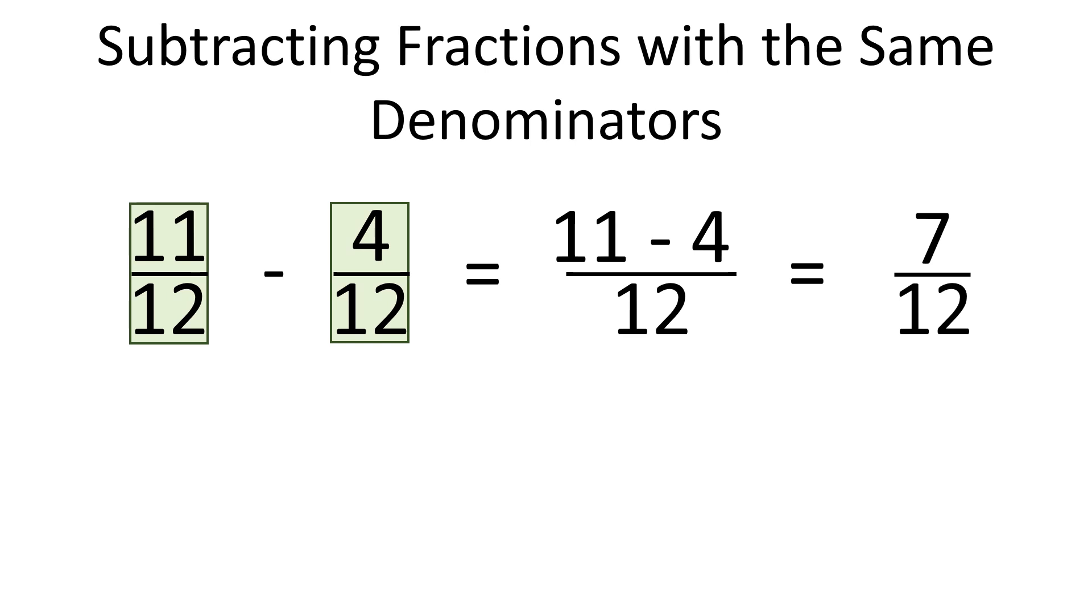We are subtracting from 11 twelfths, 4 twelfths. As the denominators are the same, we only subtract numbers in the numerators. So from 11, we subtracted 4. That gave us 7. So the answer is 7 twelfths.